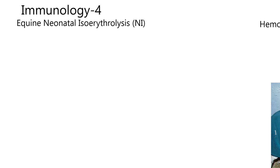Let me break that down for you. Equine — we're talking about horses. Neonatal — a horse that's just born, a foal, in other words. And then isoerythrolysis: iso means the same, erythro refers to erythrocytes, otherwise known as red blood cells, and lysis is the breakup of those red blood cells.